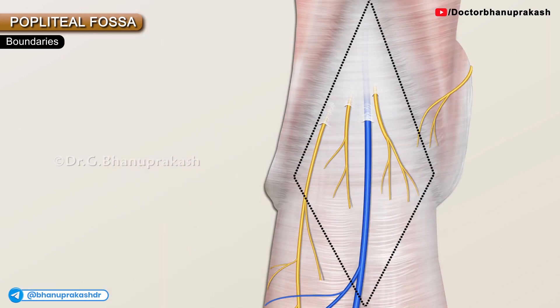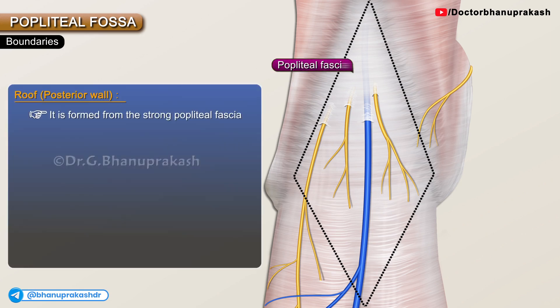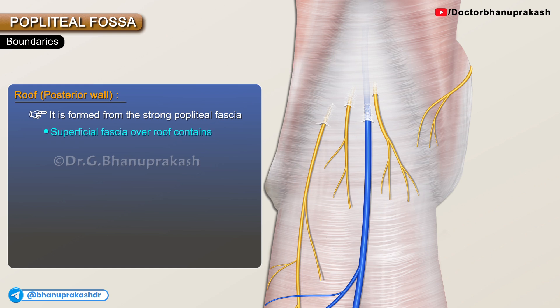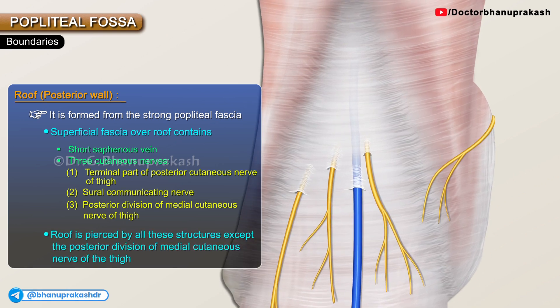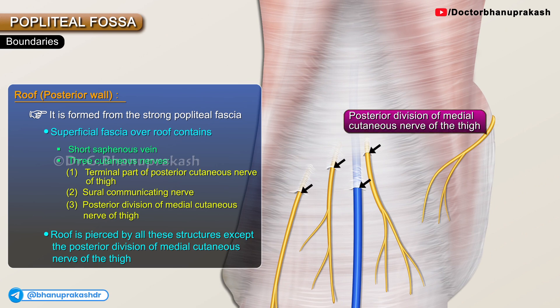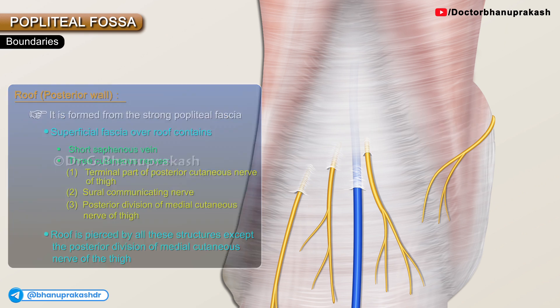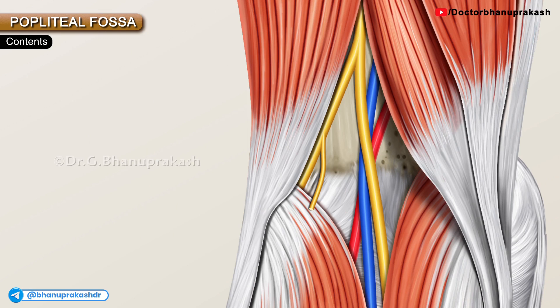The roof or posterior wall of the popliteal fossa is formed by a strong popliteal fascia. The superficial fascia over the roof contains the short saphenous vein as well as three important cutaneous nerves: the terminal part of the posterior cutaneous nerve of the thigh, the sural communicating nerve, and the posterior division of the medial cutaneous nerve of the thigh. The roof is pierced by all these structures except the posterior division of the medial cutaneous nerve of the thigh.